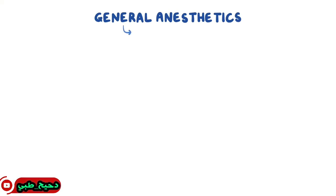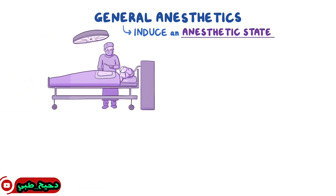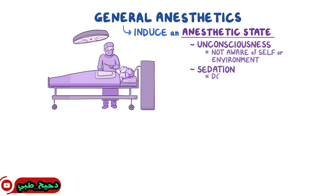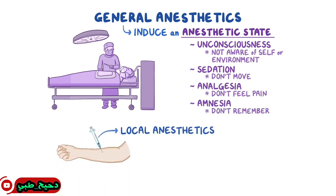General anesthetics are medications used to induce an anesthetic state in patients who are about to undergo surgery. The anesthetic state refers to a number of conditions that make surgery tolerable for the patient and more manageable for the surgeon. The conditions include unconsciousness, where the person isn't aware of themselves or their environment; sedation, so they don't move in response to painful stimulation; analgesia, so they don't feel pain; and amnesia, so they don't remember the procedure. Local anesthetics are different in that they only block pain sensation in a specific part of the body and don't affect consciousness.